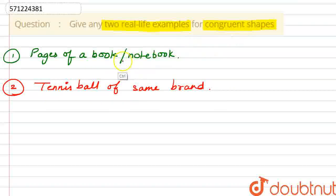That means these are congruent. So these two can be two real life examples for congruent shapes. So this is our final answer. Thank you.